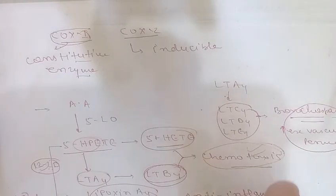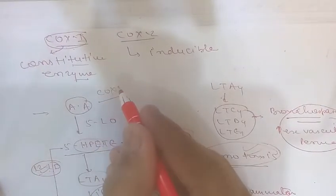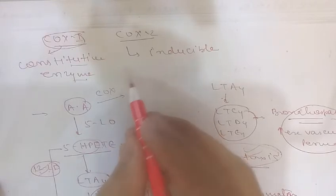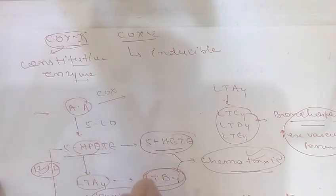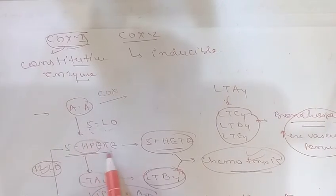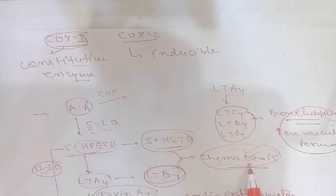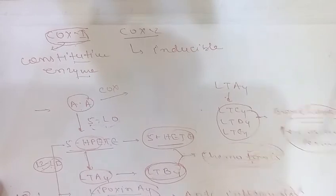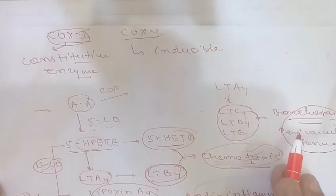To summarize the arachidonic acid metabolites: if acted on by cyclooxygenase, it forms prostacyclin (vasodilation, inhibits platelet aggregation), thromboxane A2 (vasoconstriction, promotes platelet aggregation), and prostaglandins PGD2/PGE2 (vasodilation, increased vascular permeability) with PGF2α causing bronchial smooth muscle contraction. Via lipoxygenase: 5-HPETE → LTA4 → LTB4 (chemotaxis); via 12-lipoxygenase → lipoxins (anti-inflammatory). LTC4/D4/E4 cause bronchospasm and increase vascular permeability.